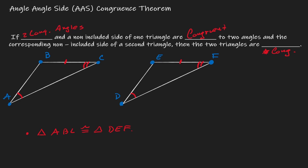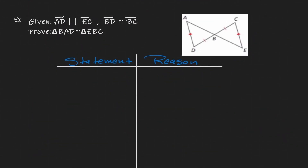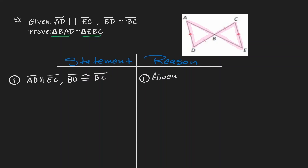Now that we've seen that illustration, let's look at the following example. The objective is the same: show that there is congruency between two triangles — triangle BAD and triangle EBC. Let's identify them. Before thinking about how to build the proof, let's just list the givens. BD is congruent to BC, and AD is parallel to EC.